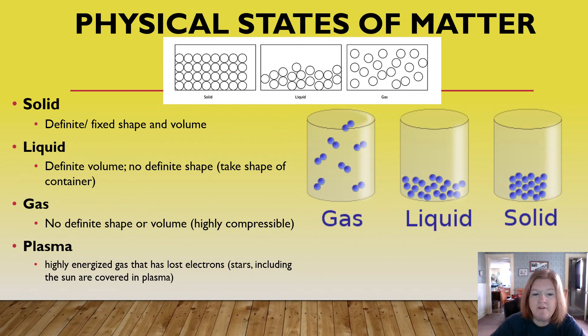And then we do have plasma. That's a highly energized gas that's lost electrons. And we find that on stars, including the sun, it's covered in plasma. So it becomes ionized, those electrons kind of become free to move around.